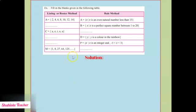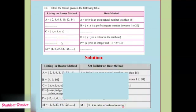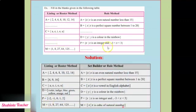Now let's move to the next question. Here again, the blank is given in the listing or roster method. Our question is: P = {x such that x is an integer and -3 < x < 3}. So here we will write P = {-2, -1, 0, 1, 2}. Minus 3 is less than x means x is greater than minus 3. So we take -2, -1, 0, 1, 2, and 2 is less than 3.